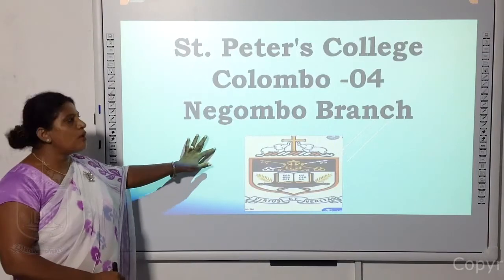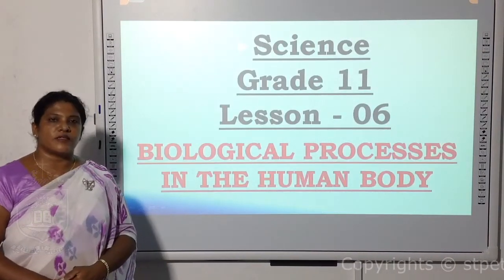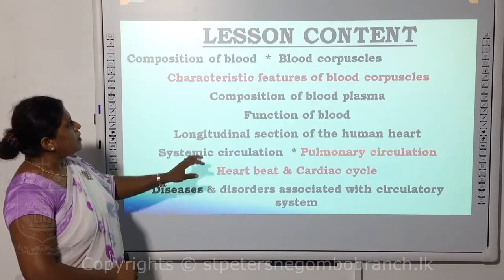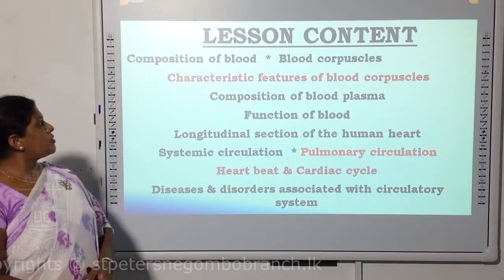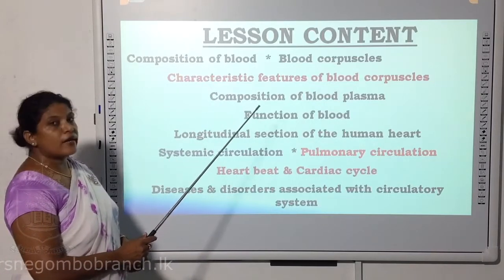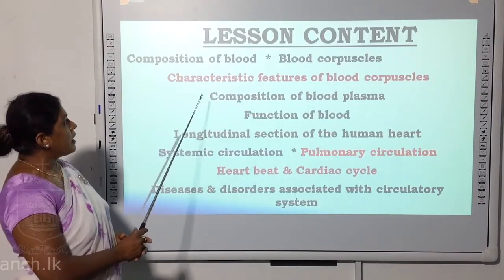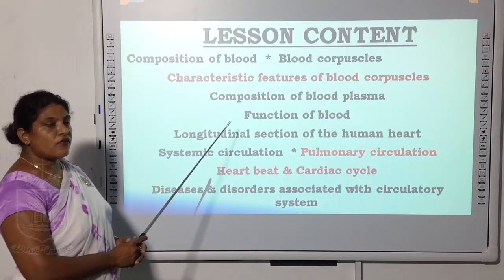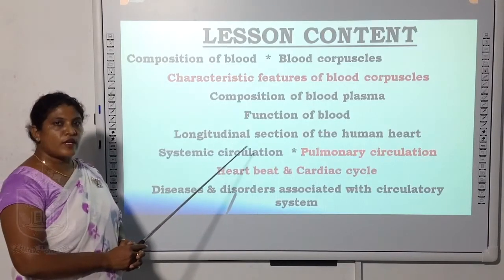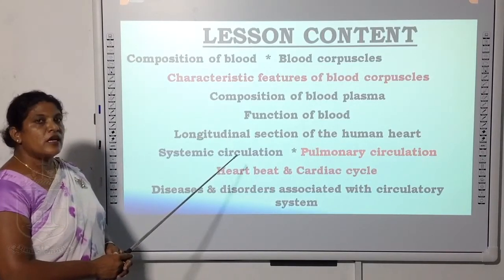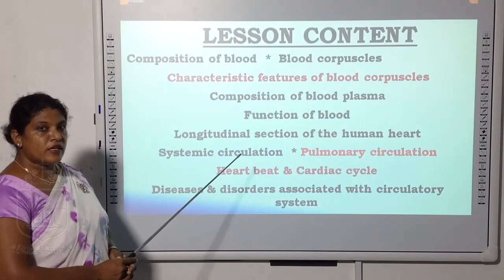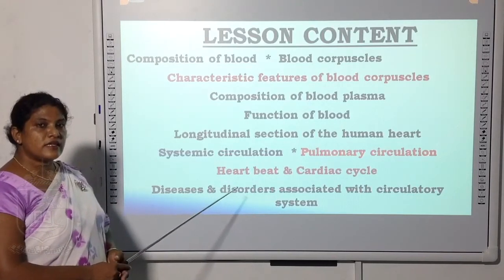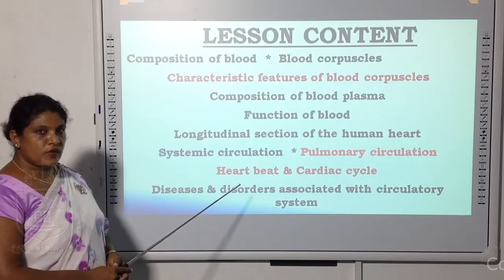Today I am going to discuss human biological systems, specifically the circulatory system. We will cover the composition of blood, blood corpuscles or blood cells, characteristic features of blood cells, composition of blood plasma, functions of blood, longitudinal section of the human heart, systemic circulation, pulmonary circulation or double circulation, heartbeat and the cardiac cycle, and finally the diseases and disorders associated with the human circulatory system.